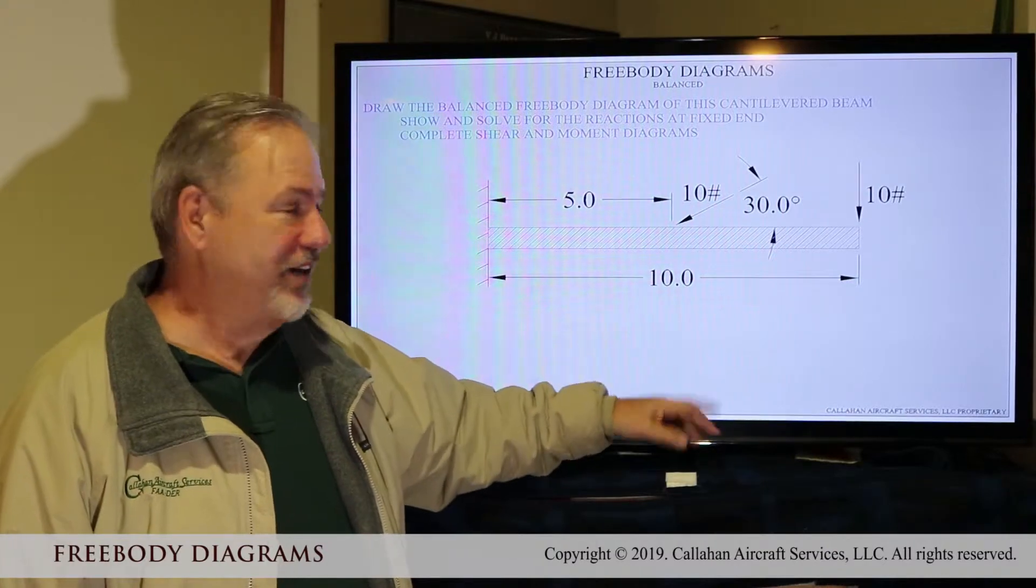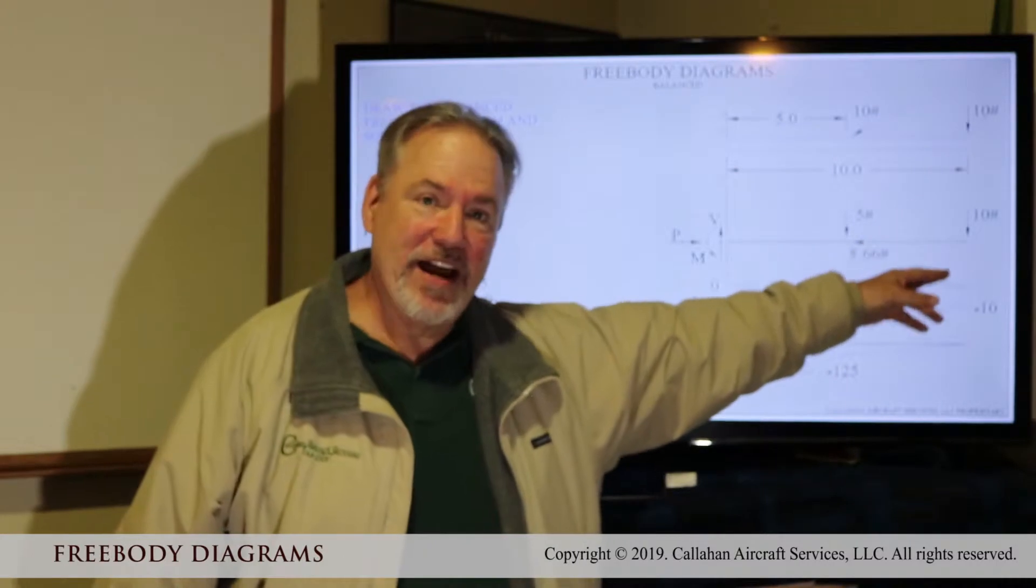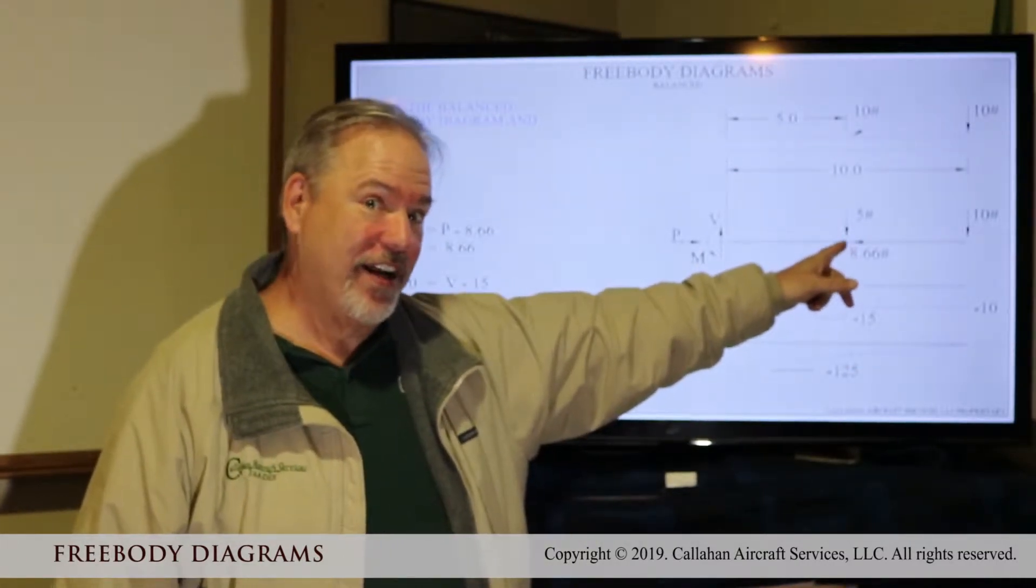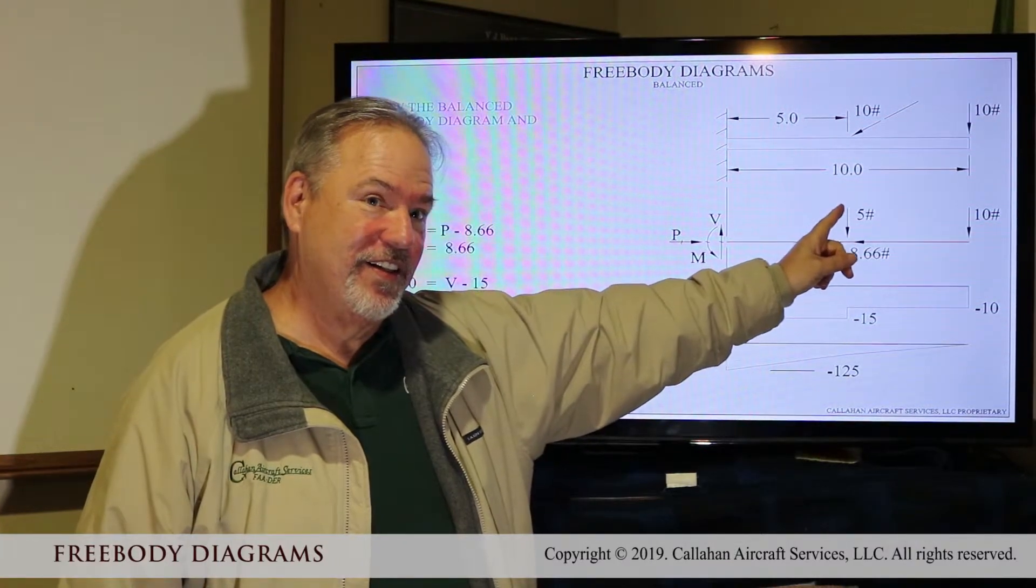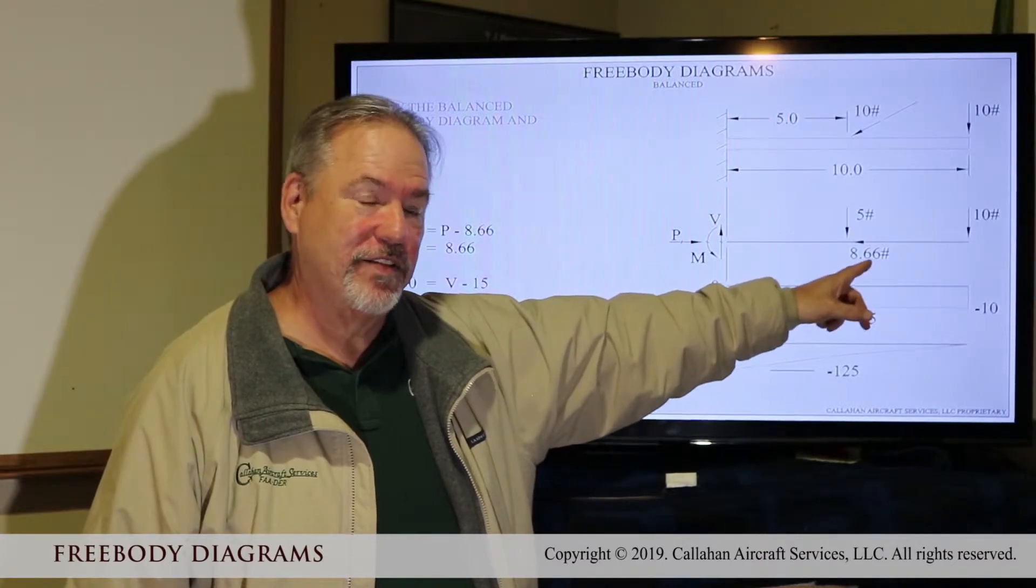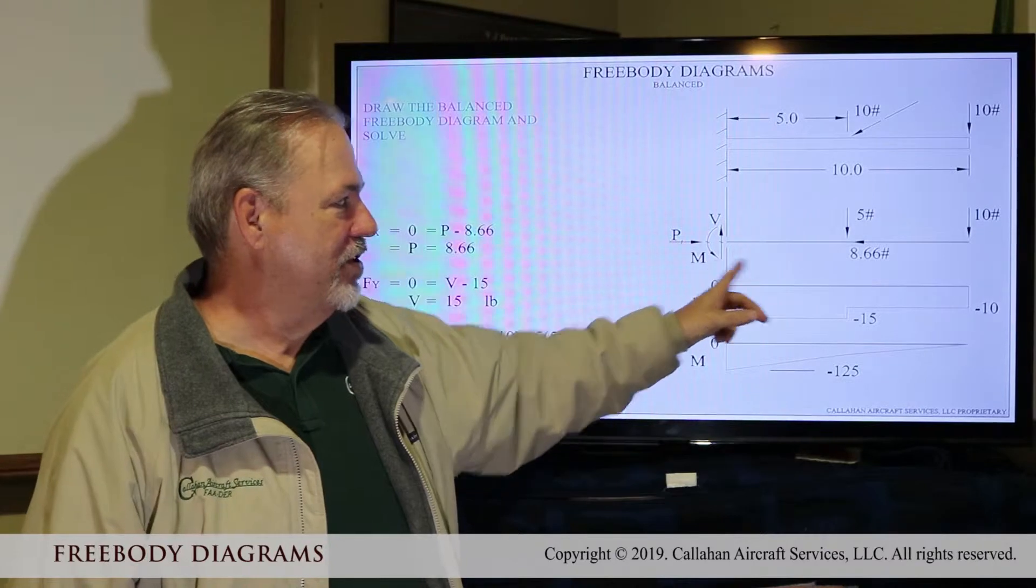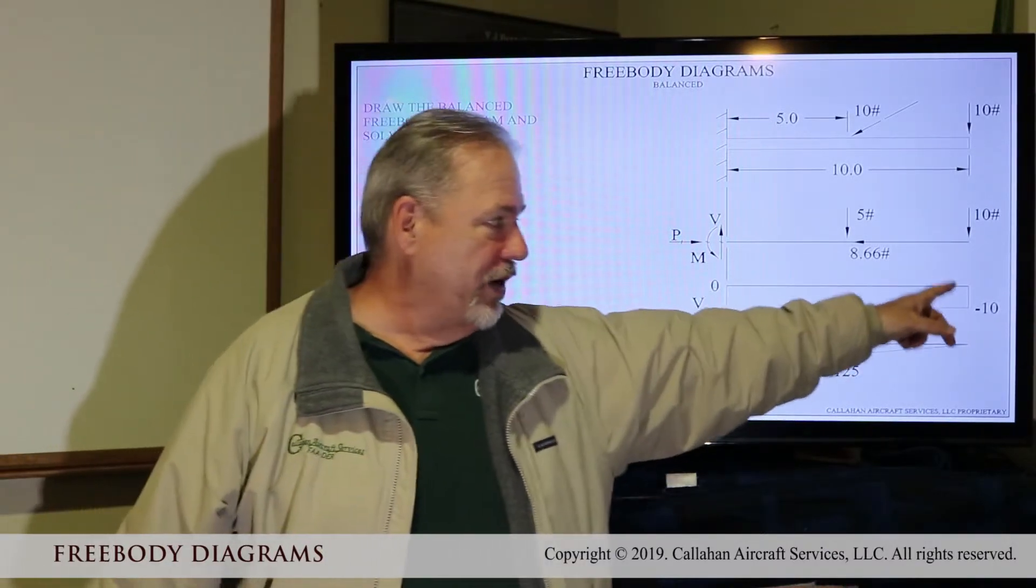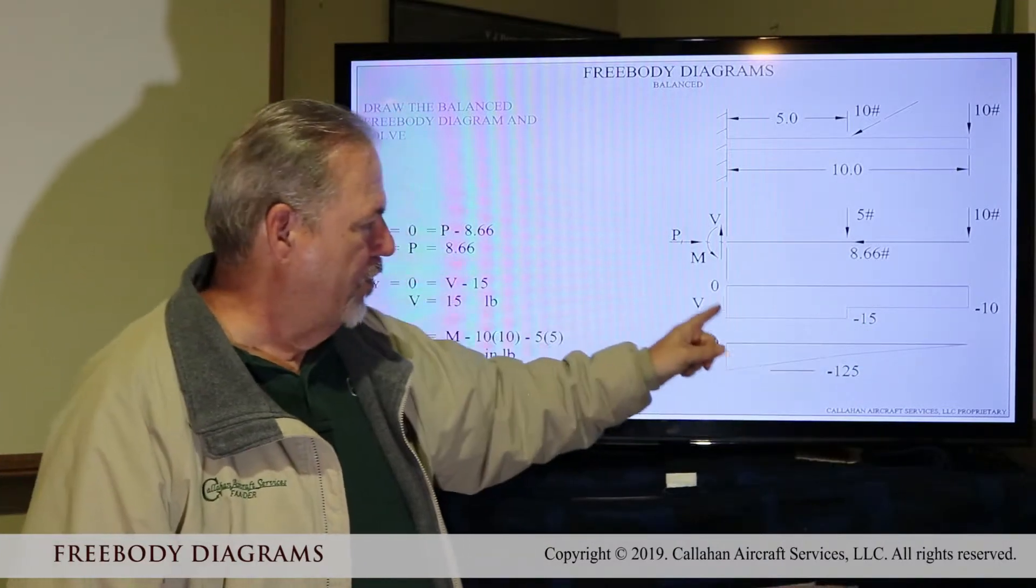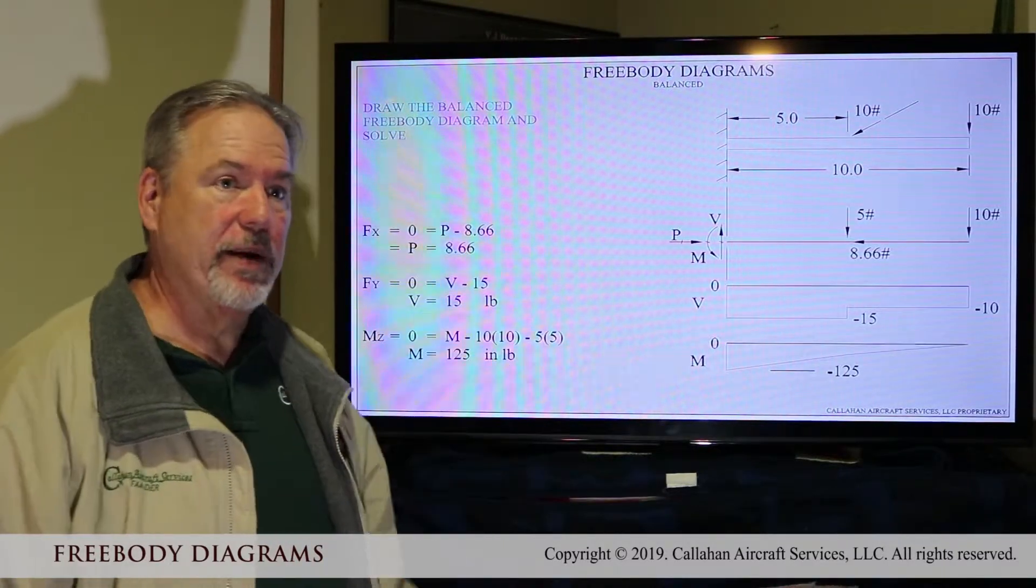So to solve this one, we have ten pounds down. We have the sine of thirty degrees times ten, cosine 30 degrees times ten, which gives us our free body. So we go down ten pounds at the end, we go down another five pounds. Come over we go up 15, so shear is fifteen pounds.